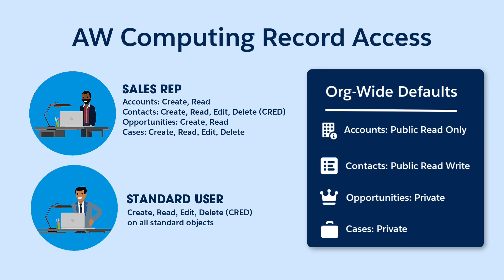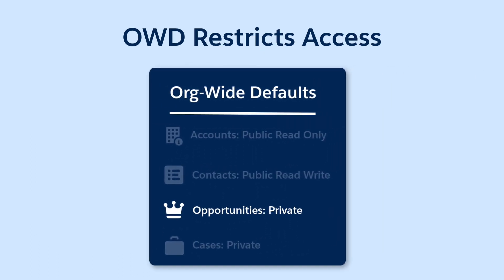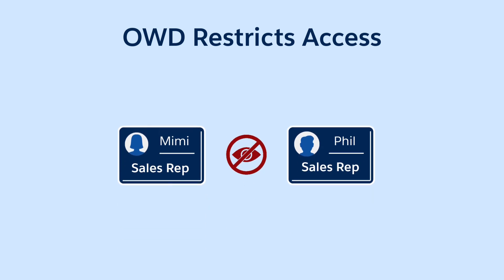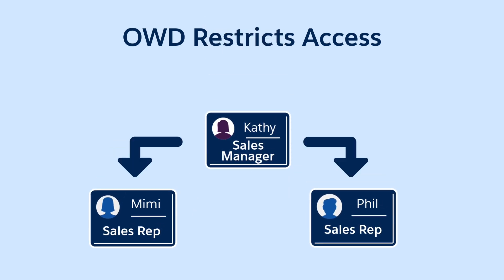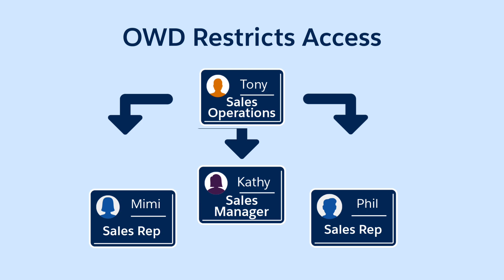Since the org-wide defaults for opportunities are private, users can't see each other's opportunities. Only the user who owns the record can view it or see it in reports. However, at AW Computing, the sales managers need to see opportunities that their teams are working on, so they can run reports and analyze the sales pipeline. Sales operations work on opportunities with both the inside sales reps and the managers, so they need to see all opportunities, too.